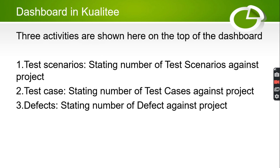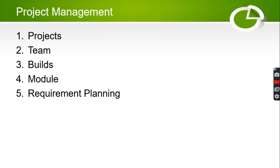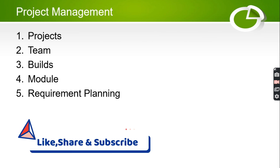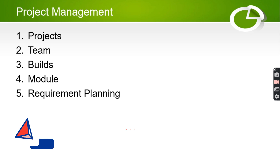The dashboard comprises mainly three activities. You can see the test scenarios — the number of test scenarios against each project — then the test cases, the number of test cases for each project, and the defects — the number of defects against each project.